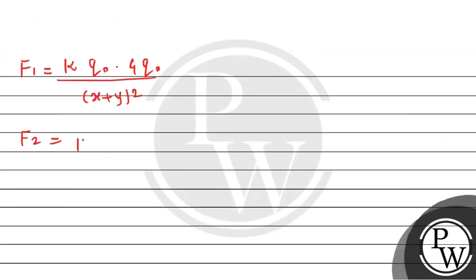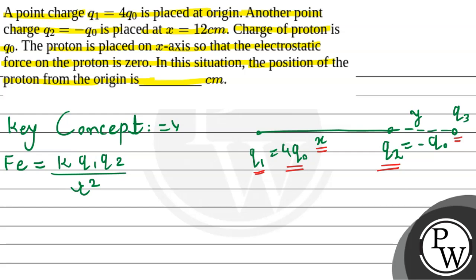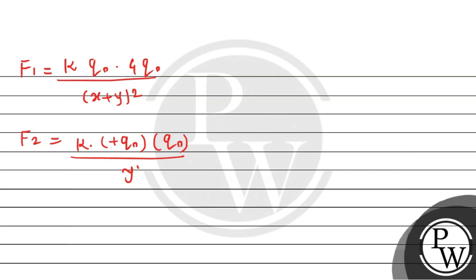So this must be K times minus Q0, so basically हम इसमें negative sign नहीं लेते, so let it be Q0 times Q0 divided by distance का whole square. So यहां से यहां तक का distance कितना दे रखा है Y के बराबर, so यह simply हो जाएगा Y का square.